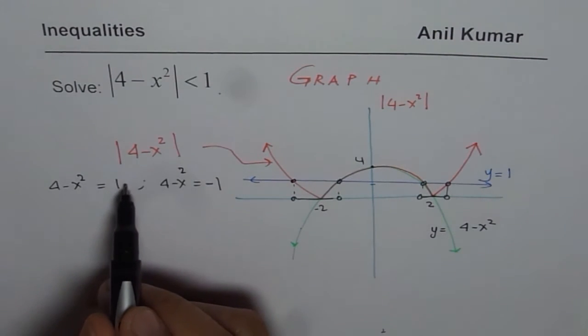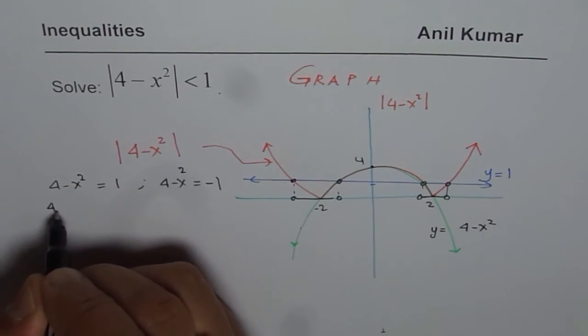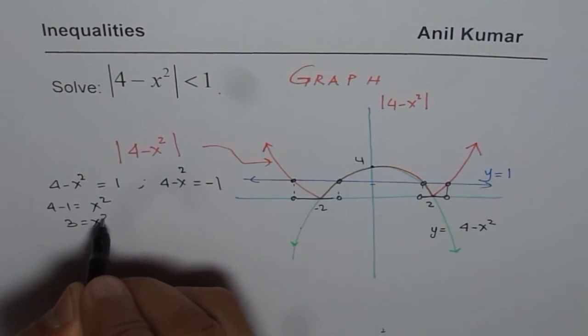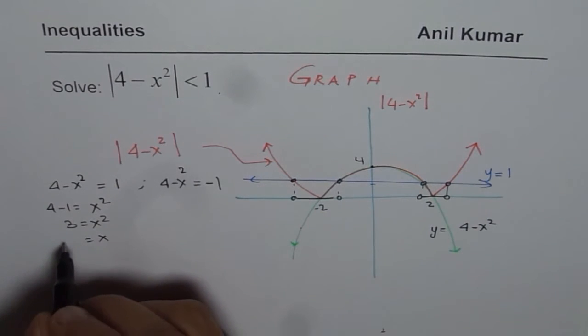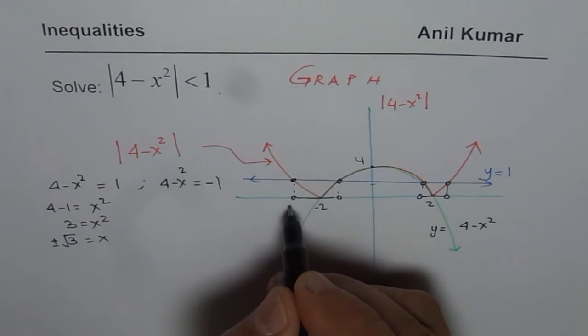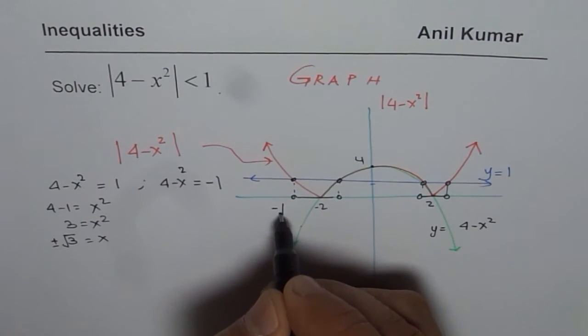So we bring x to this side, 1 to this side. So we get 4 minus 1 equals to x squared, or 3 equals to x squared, or x is equals to plus minus square root of 3. Is that okay? So that gives you two points. This one here is minus square root of 3.